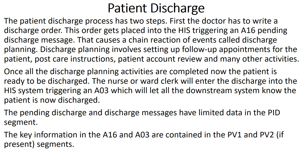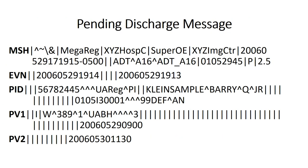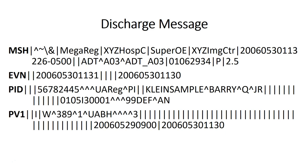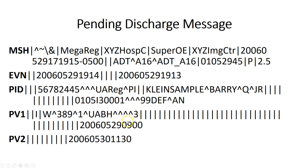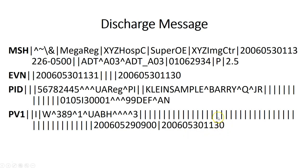The pending discharge and discharge messages have limited data in the PID segment. The key information in the A16 and A03 is contained in the PV1 and PV2 segments. Here's a pending discharge message for Mr. Klein — he's an inpatient on West 389 and is going to be discharged. His discharge order was written on May 29th with a planned discharge of May 30th at 11:30, and he was actually discharged right on time at 11:30. So the doctor initiates discharge planning, everything gets completed, and then the patient is actually discharged.